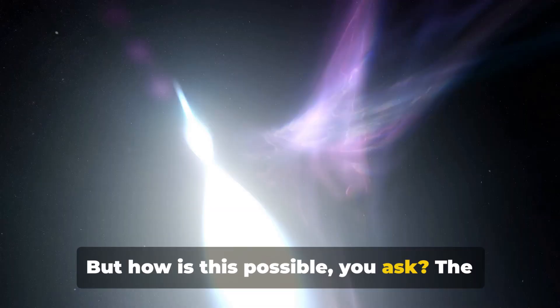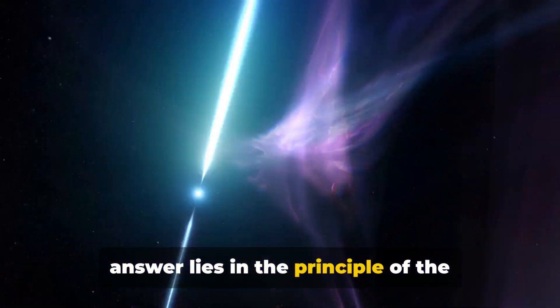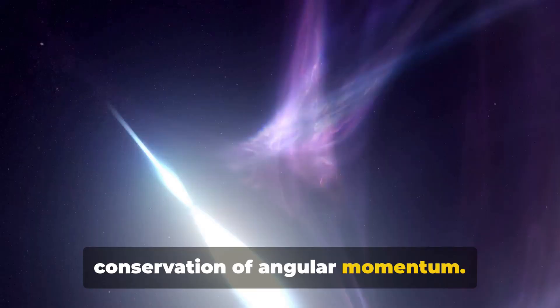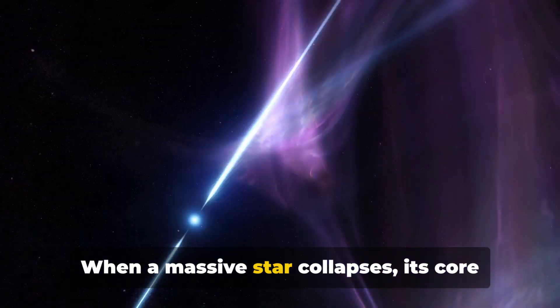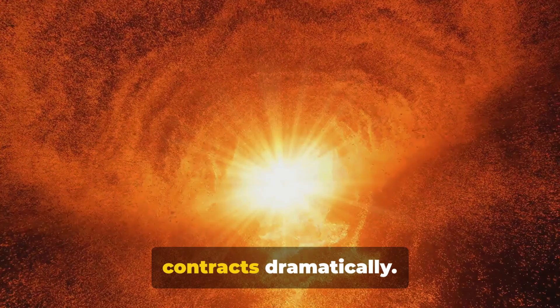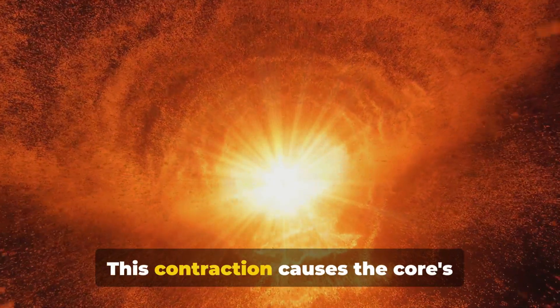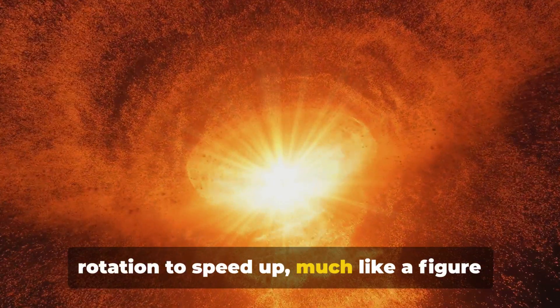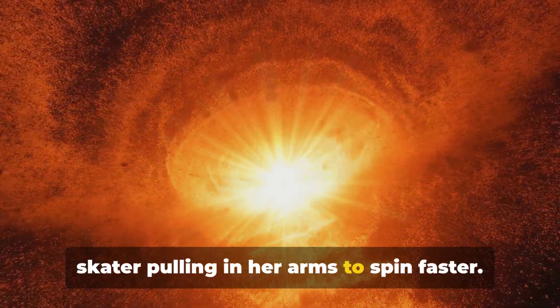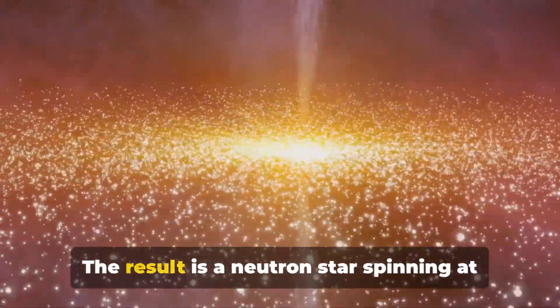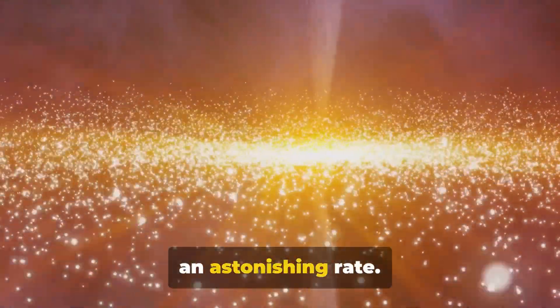But how is this possible you ask? The answer lies in the principle of the conservation of angular momentum. When a massive star collapses, its core contracts dramatically. This contraction causes the core's rotation to speed up, much like a figure skater pulling in her arms to spin faster. The result is a neutron star spinning at an astonishing rate.